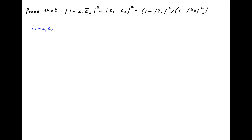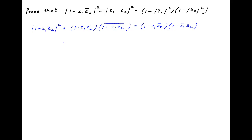The first term on the left hand side is the absolute value of 1 minus z1 times the conjugate of z2, whole square. This can be written as the product of 1 minus z1 times the conjugate of z2, and the conjugate of 1 minus z1 times the conjugate of z2. This is equal to 1 minus z1 times the conjugate of z2, multiplied by 1 minus the conjugate of z1 times z2. Opening this up, we get 1 minus the conjugate of z1 times z2, minus z1 times the conjugate of z2, plus z1 times the conjugate of z2 times the conjugate of z1 times z2.